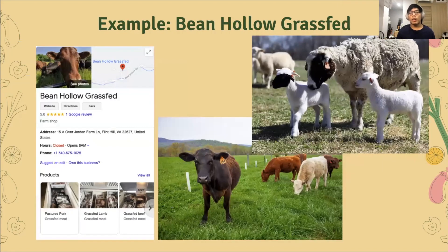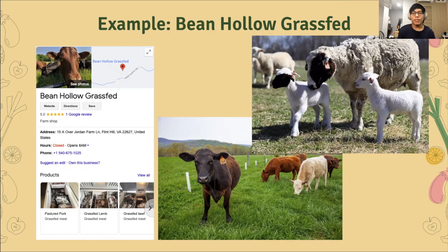Here is an example of a sustainable farm called the Bean Hollow Grass Fed Farm, located in the United States. In this farm, cows and sheep are put together because they graze on different kinds of vegetation. This diversity helps control diseases and parasites, and it also increases productivity and improves pasture.